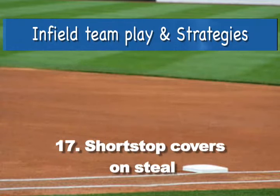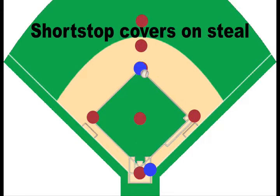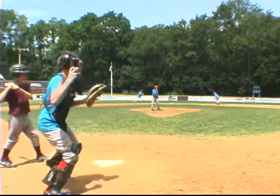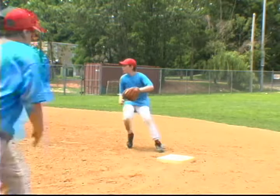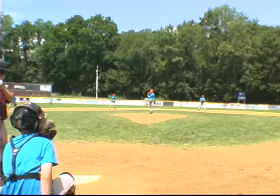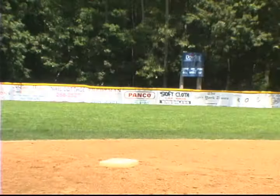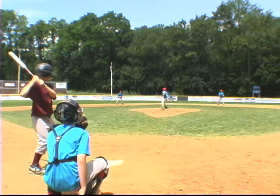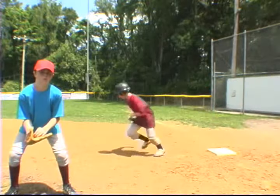Play seventeen: shortstop covers second on a steal. When a player reaches first base, players will communicate who will cover the base. With a player attempting to steal second in youth baseball, many coaches work with both the shortstop or the second baseman covering. Marty Shupak recommends it's best to have one position cover the base — in this case, the shortstop covers with the second baseman backing up the throw. Marty Shupak always recommends and practices communication by name.